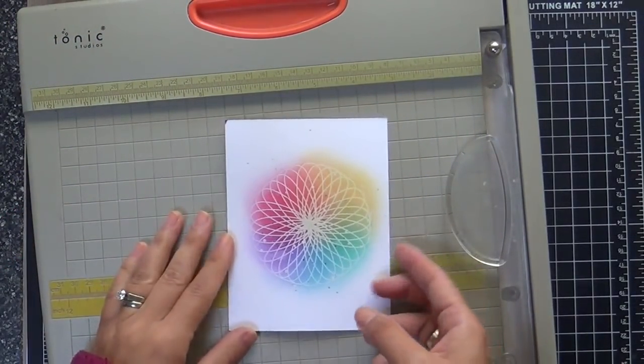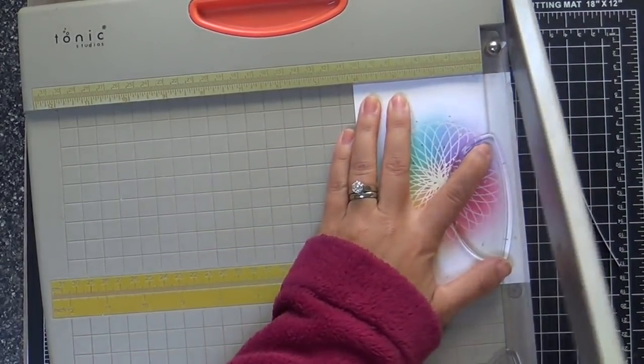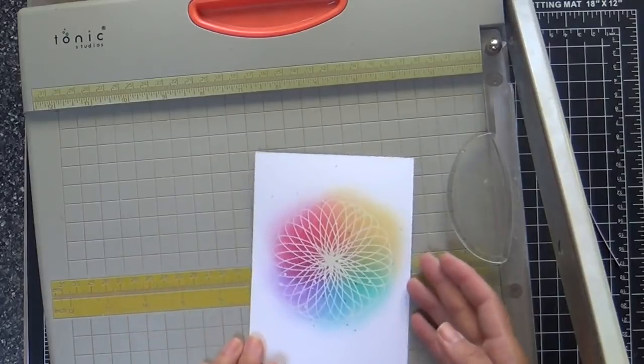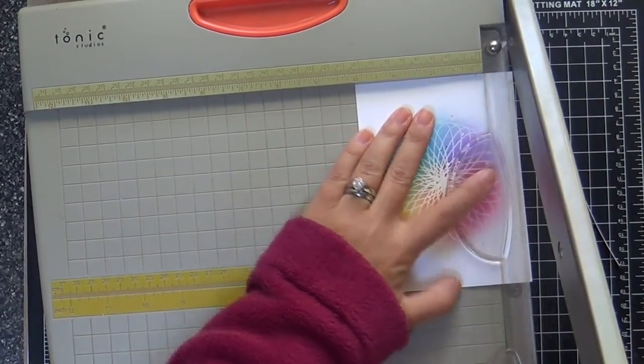Now I noticed my design isn't completely centered, so I'm taking my paper trimmer and trimming this down until I get it centered. I also want it to be just a little bit smaller than my card base. I do that a lot.